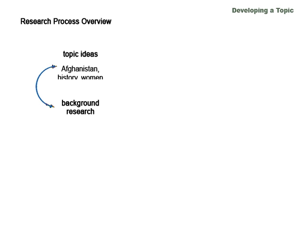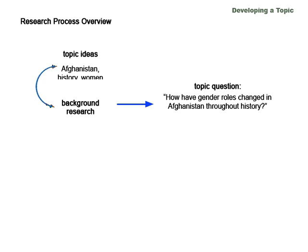After you've got some good topic ideas, it can be helpful to format your ideas into a question that can be answered. You can think of this as the question you're trying to answer as you're doing in-depth research, which is the next step in the process. As you're doing more in-depth research — that is, looking for articles or other sources to include in your paper — keep in mind that you can change and further develop your topic question. Research is a dynamic process, so don't be afraid to discover new things.